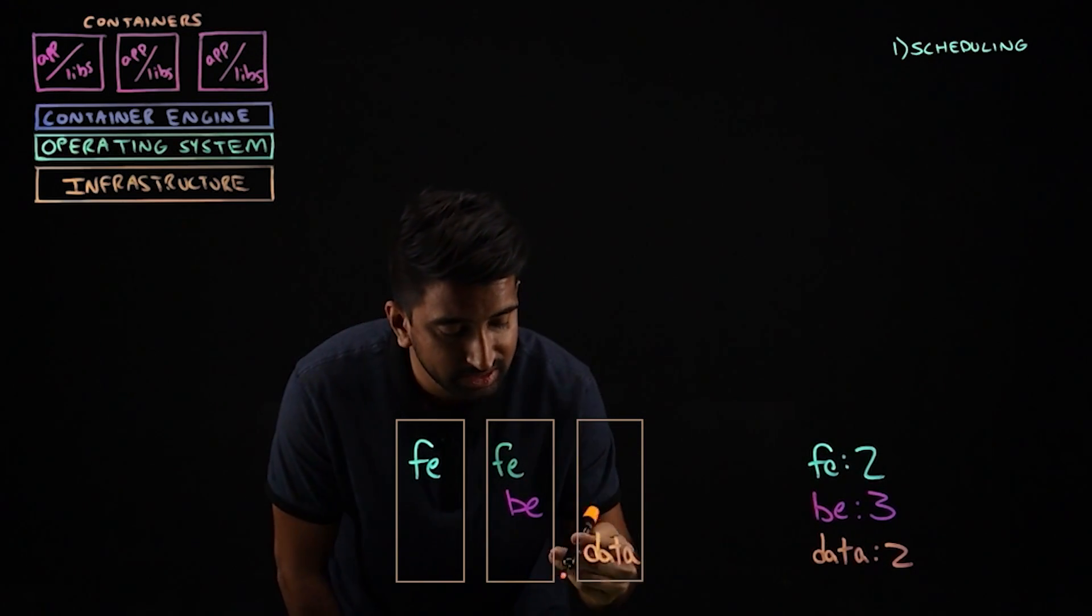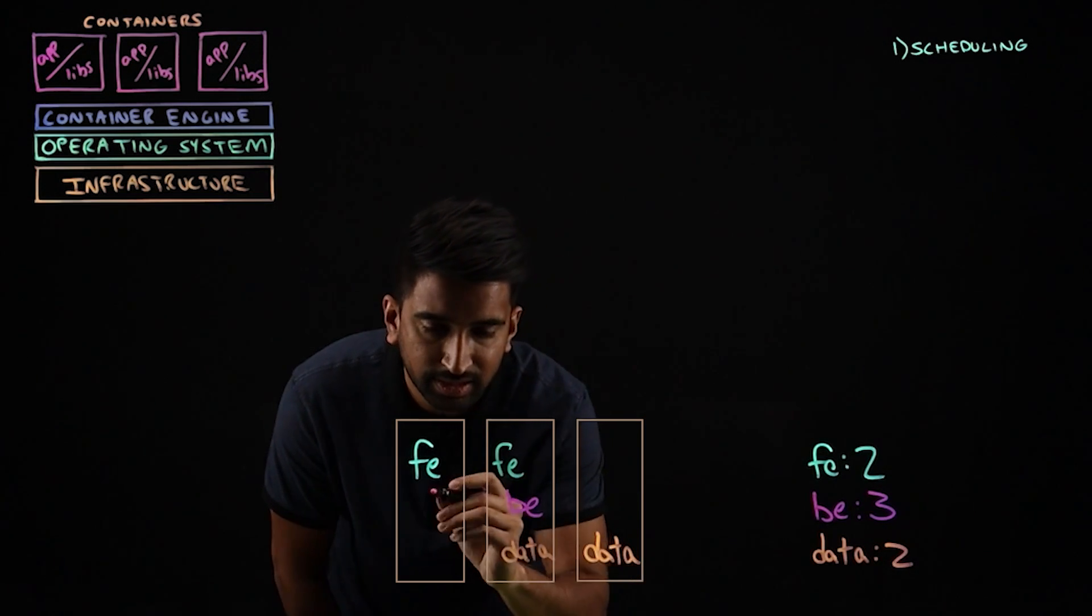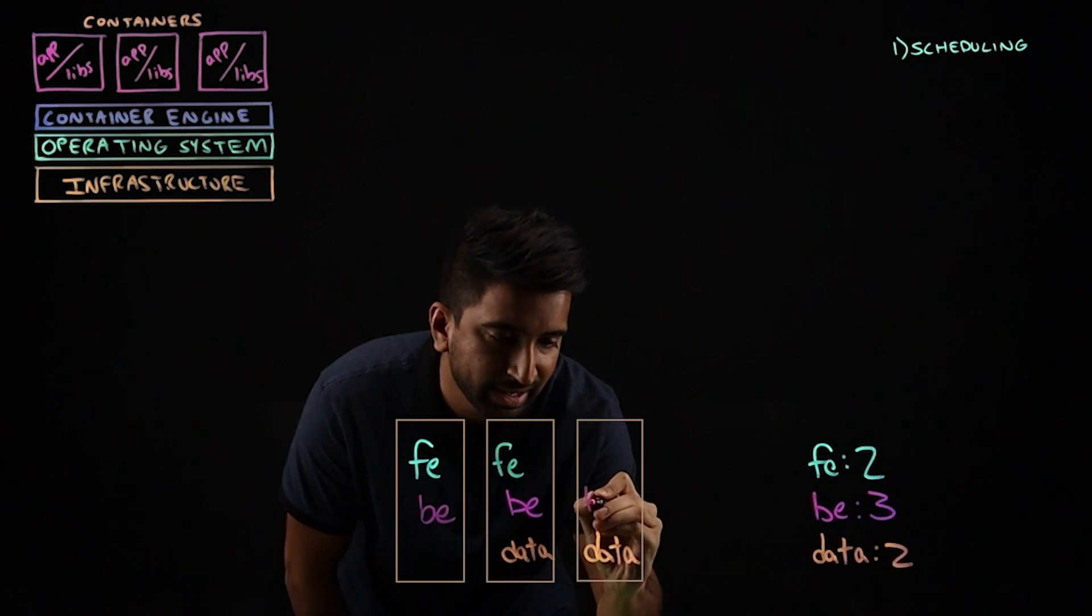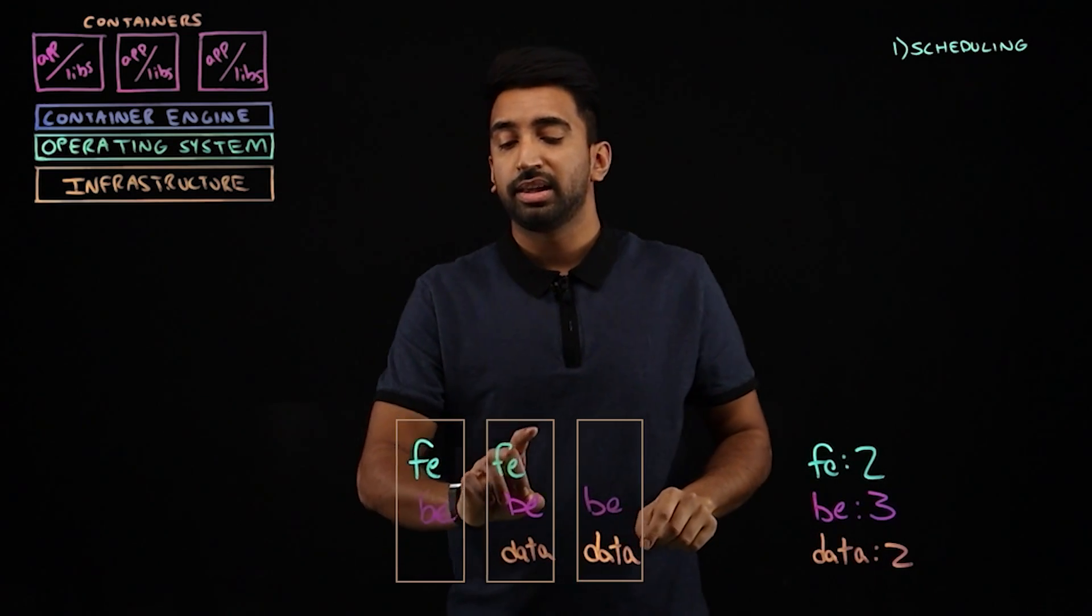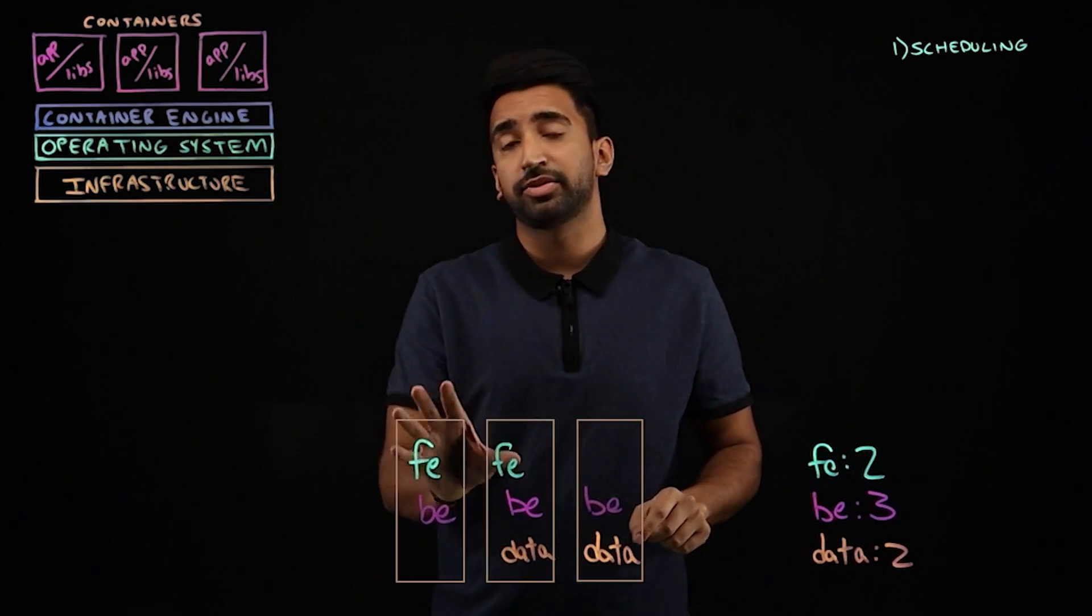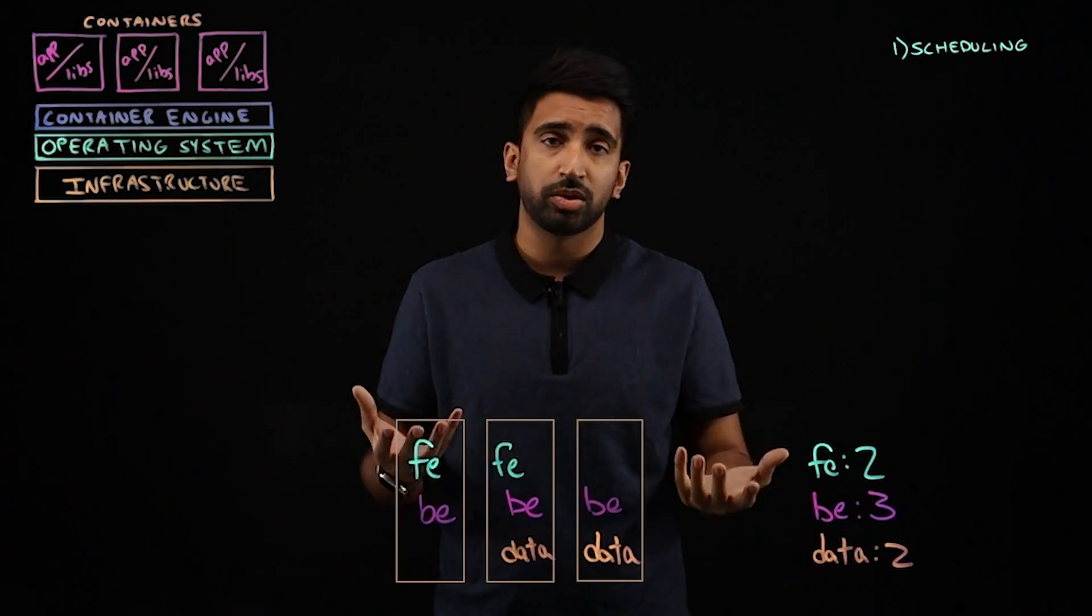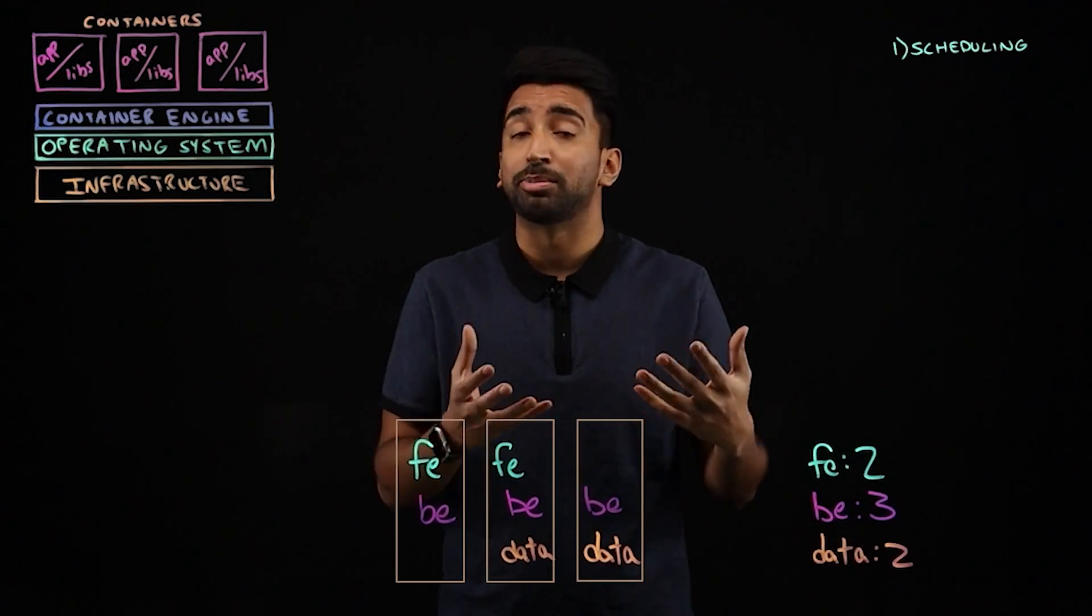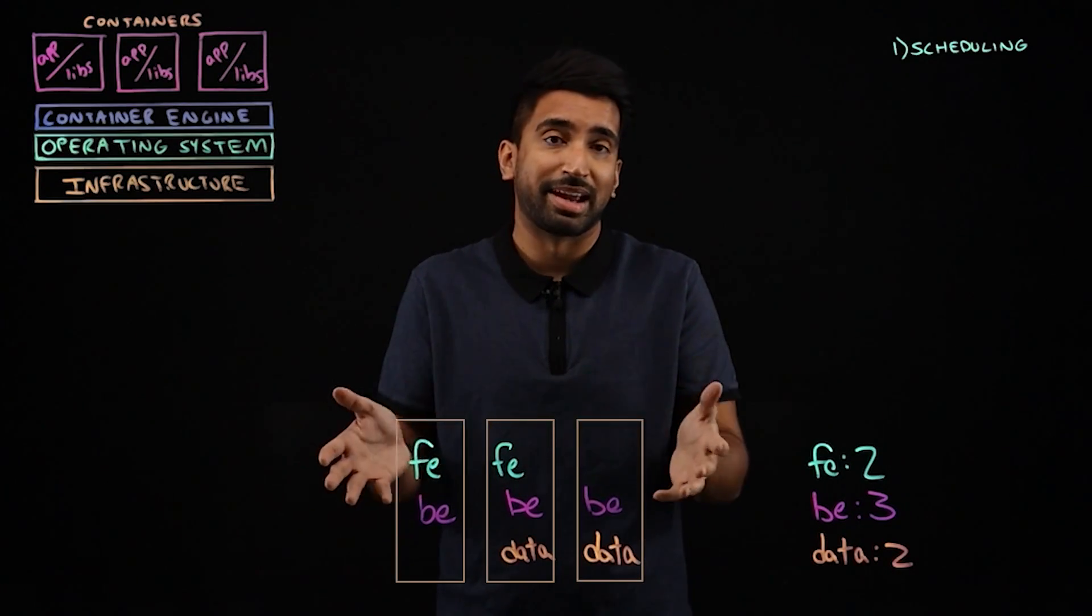So the first thing it's going to do is spin up those containers. So we needed two of these, two of the data containers, and three of the back-end. One of the things to think about here is that I want to point out, these are actually pods in the context of Kubernetes. A pod is just one or more containers. It's a logical grouping. Kubernetes likes working with pods. In today's example, each pod is one container.